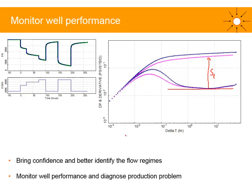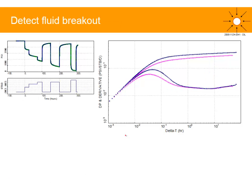This demonstrates that simply by doing a derivative overlay — without performing any detailed analysis, just by looking at the plot — you can quickly monitor well performance and diagnose production problems.